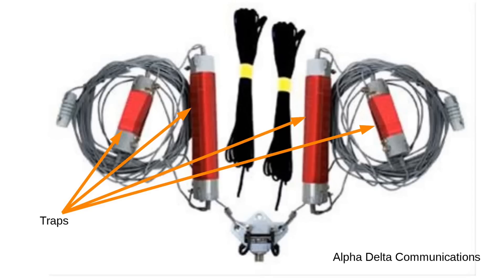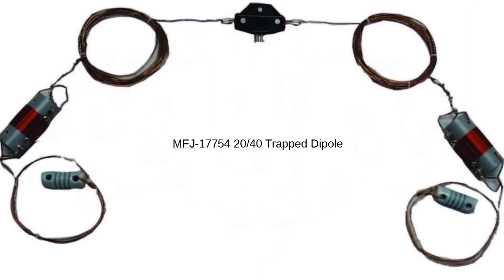Trapped antennas have been around for a long time. I'm going to show you some examples of traps in real antennas, and then we'll look at how they work. This right here is an antenna from Alpha Delta Communications, and the traps are the things that have got the red wire — they're coils wound on plastic forms. And in here we have the MFJ 17754,